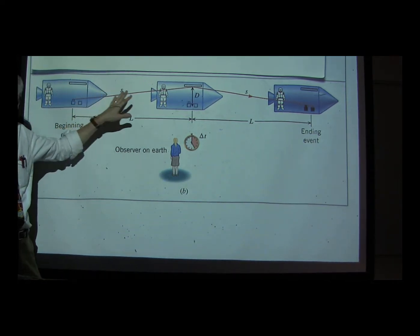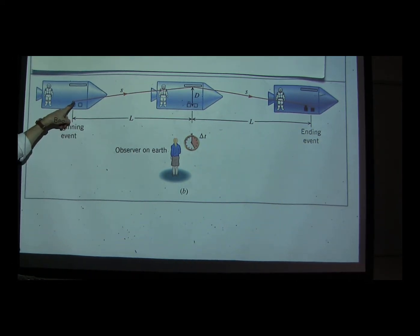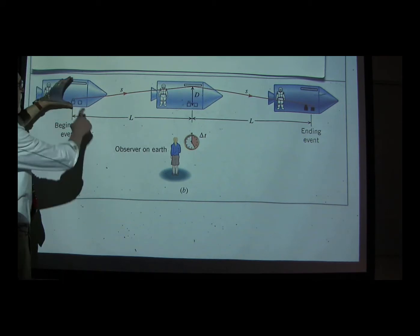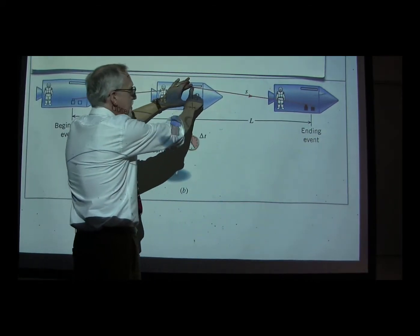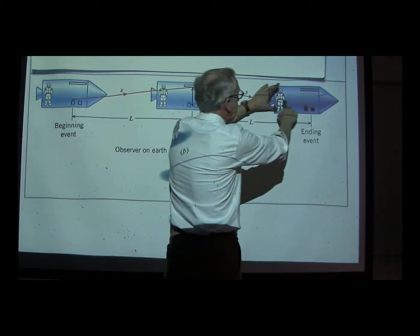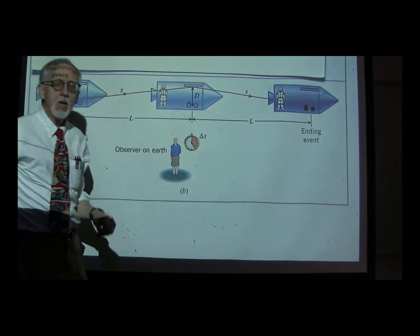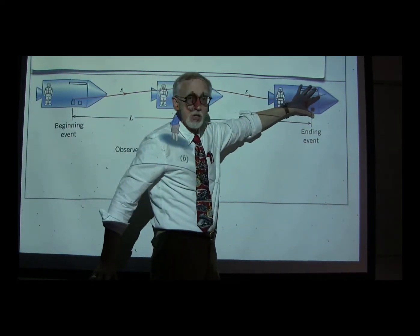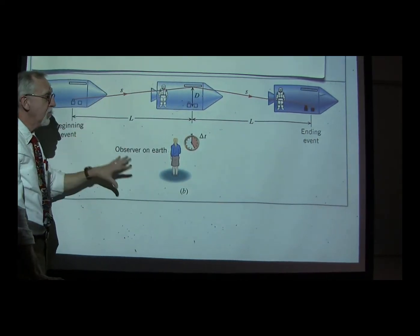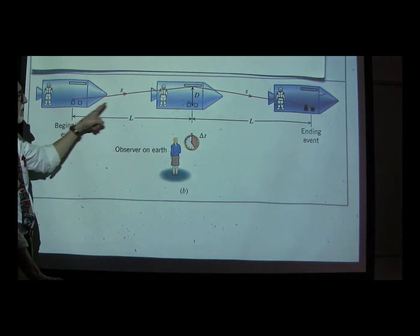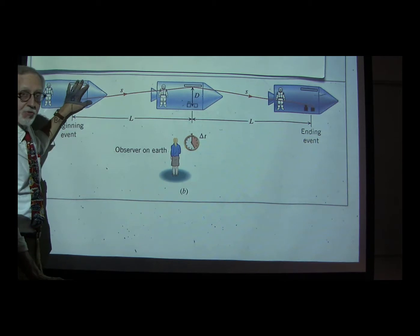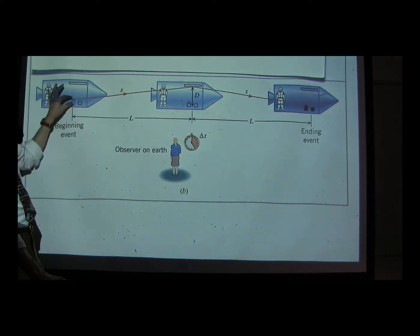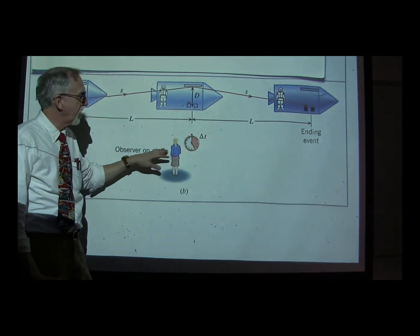Let's look at the events of the clock ticking. The emission of light from the emitter goes towards the mirror, but the rocket is moving relative to the observer on the Earth, so the light actually has to travel a diagonal path to get up to the mirror. It reflects off the mirror, then follows a diagonal path back down to the receiver. So the emission of the light occurs over here, and the reception of the light occurs over here — the rocket is moving relative to the Earth. The time between these two events, the emission and the reception, measured by the observer on the Earth, we'll call delta T.